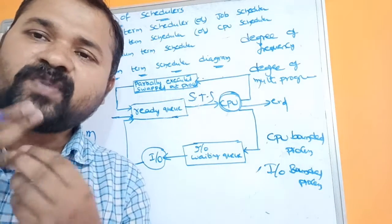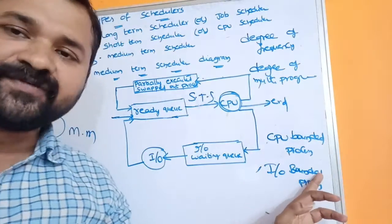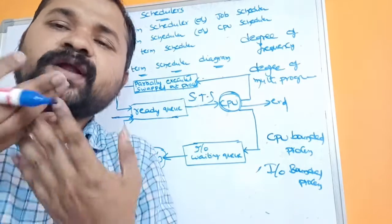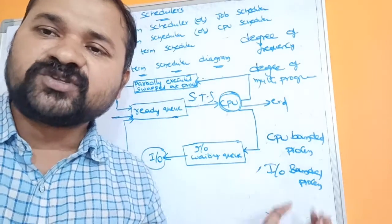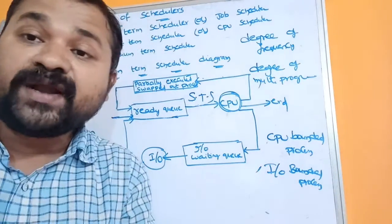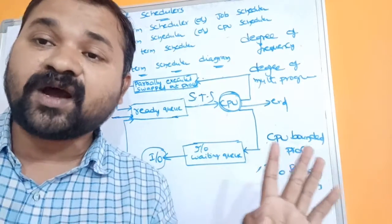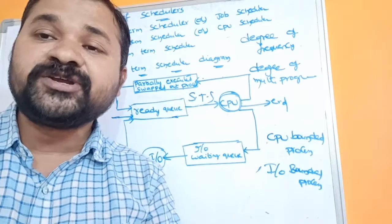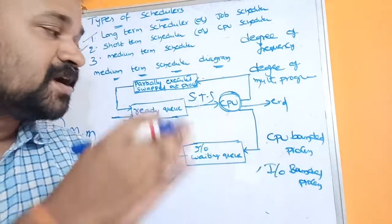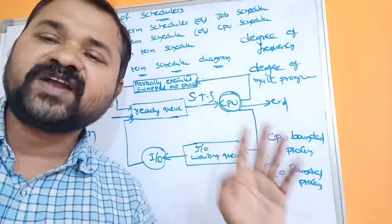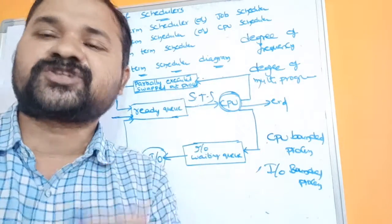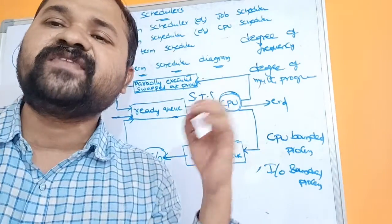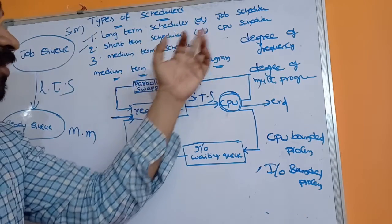If the operating system loads a process with more I/O instructions into main memory, it contains more I/O instructions and fewer CPU instructions, meaning only I/O devices are utilized and the CPU is wasted. That is why the long-term scheduler must select processes containing a combination of CPU-bounded and I/O-bounded instructions. Otherwise, utilization of both the CPU and I/O devices will be very low.